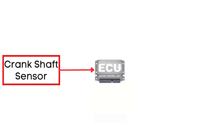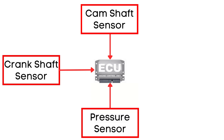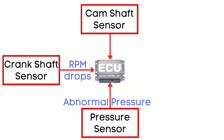The Engine Control Unit, or ECU, monitors the signals from the Crankshaft Position Sensor, Camshaft Position Sensor, and Cylinder Pressure Sensor. These sensors provide real-time data about your engine's performance. When a misfire occurs in one or more cylinders, it causes the engine's RPM to drop abruptly. Simultaneously, the pressure inside the cylinder becomes abnormal. This sudden change in signals from the sensors is what the ECU reads as a misfire.